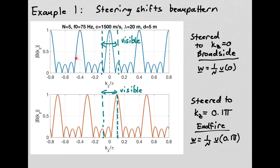Shifting the beam pattern to endfire centers the main lobe at KZ = 0.1π. Grating lobes are still present but none shift into the visible region, so there's still no aliasing. This is expected because D is less than half the wavelength, so we satisfy the spatial Nyquist theorem and aliasing is not a problem regardless of steering angle.